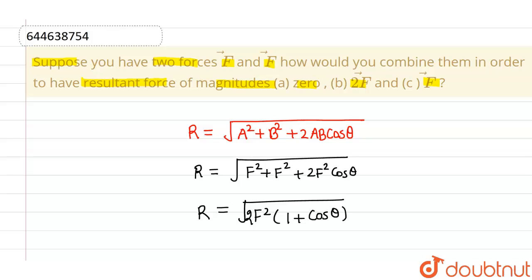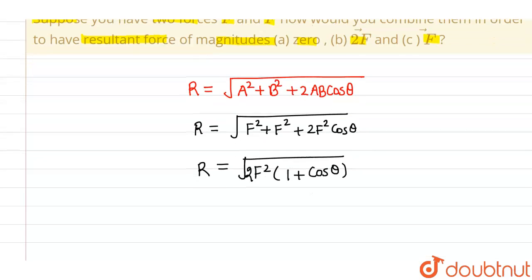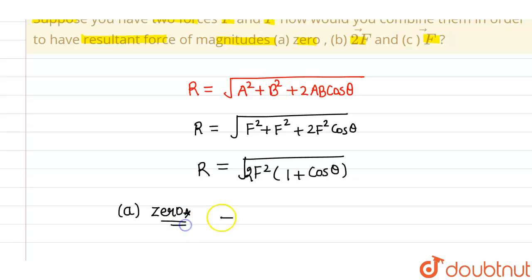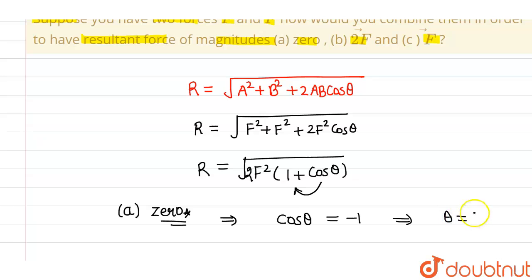Now in the first part, we have to find the angle θ in order to make the resultant zero. So for the resultant to be zero, the value of cosθ should be equal to −1, so that the resultant comes out to be zero. This implies that θ should be equal to 180°.